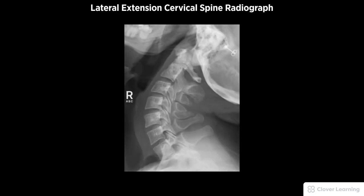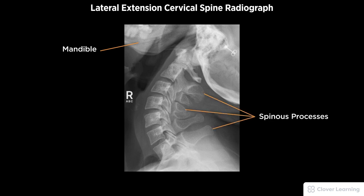A diagnostic lateral extension cervical spine radiograph must be free of motion and rotation. Demonstrated anatomy includes the body of the mandible almost horizontal, seven spinous processes in profile, depressed and closely spaced, with proper visualization of soft tissue and bony detail.